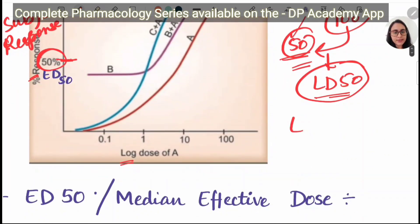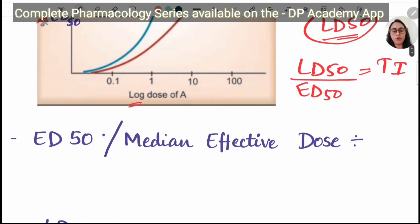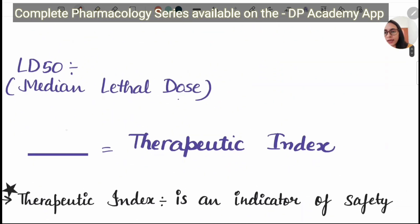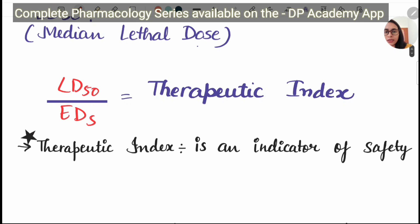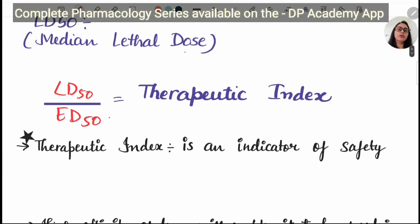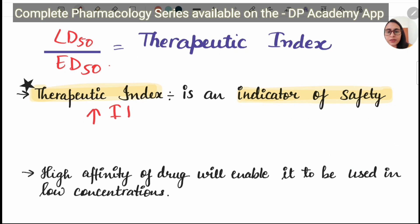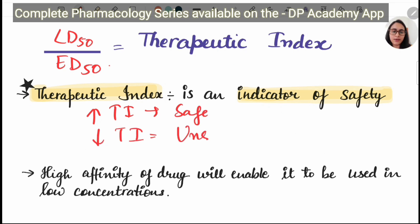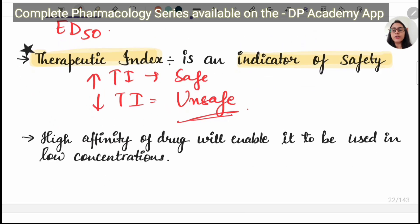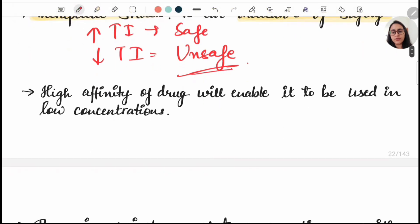Therapeutic index is LD50 divided by ED50, and it tells about the therapeutic index — that is, the margin of safety of a drug. If you increase the therapeutic index, the drug is safer; if you decrease the therapeutic index, the drug is unsafe. So therapeutic index is an indicator for the safety of a drug. A high therapeutic index means more safety. High affinity of a drug will enable it to be used in low concentration.